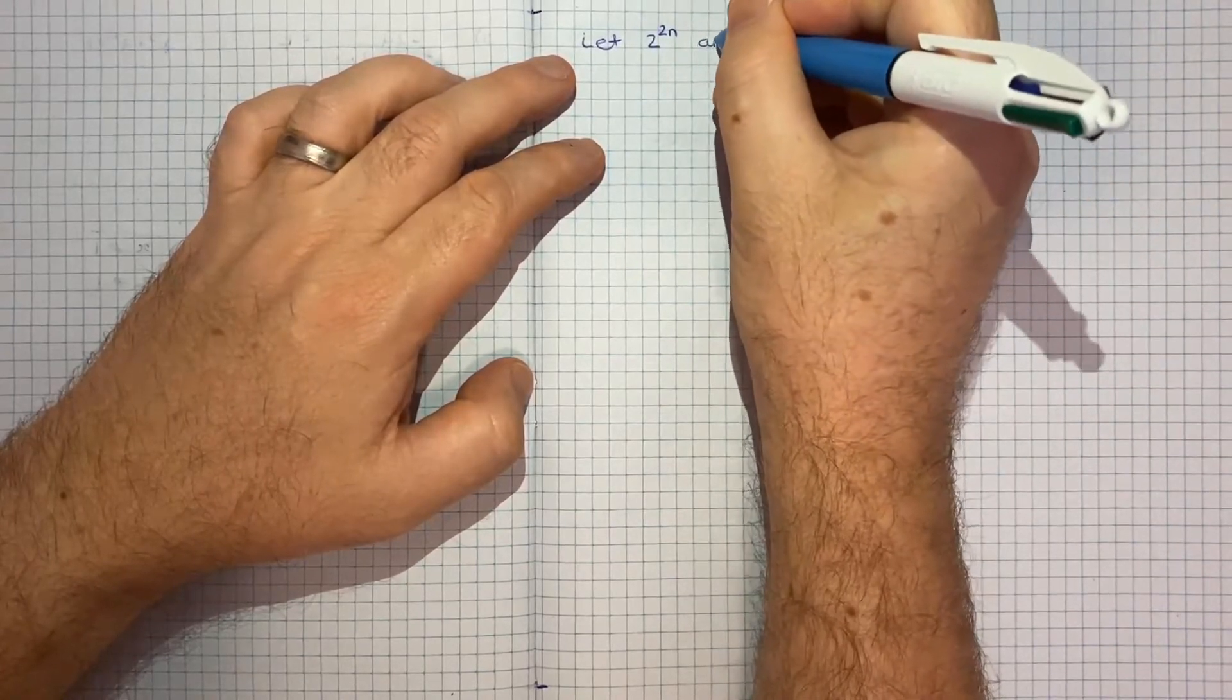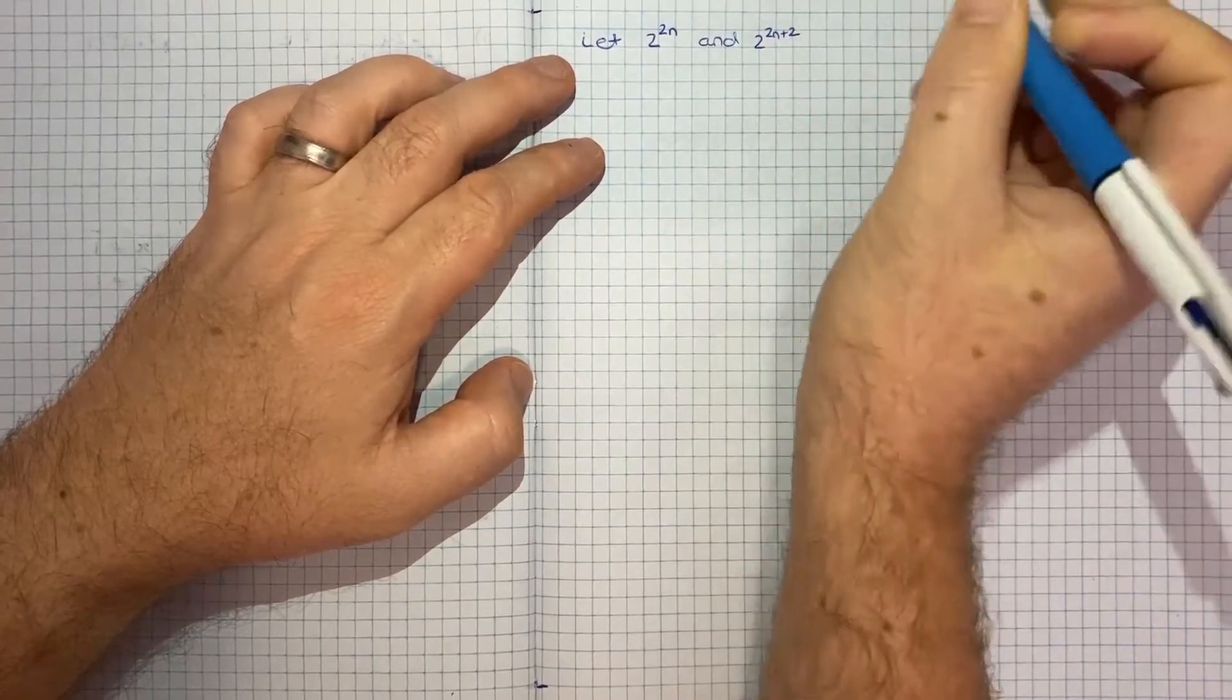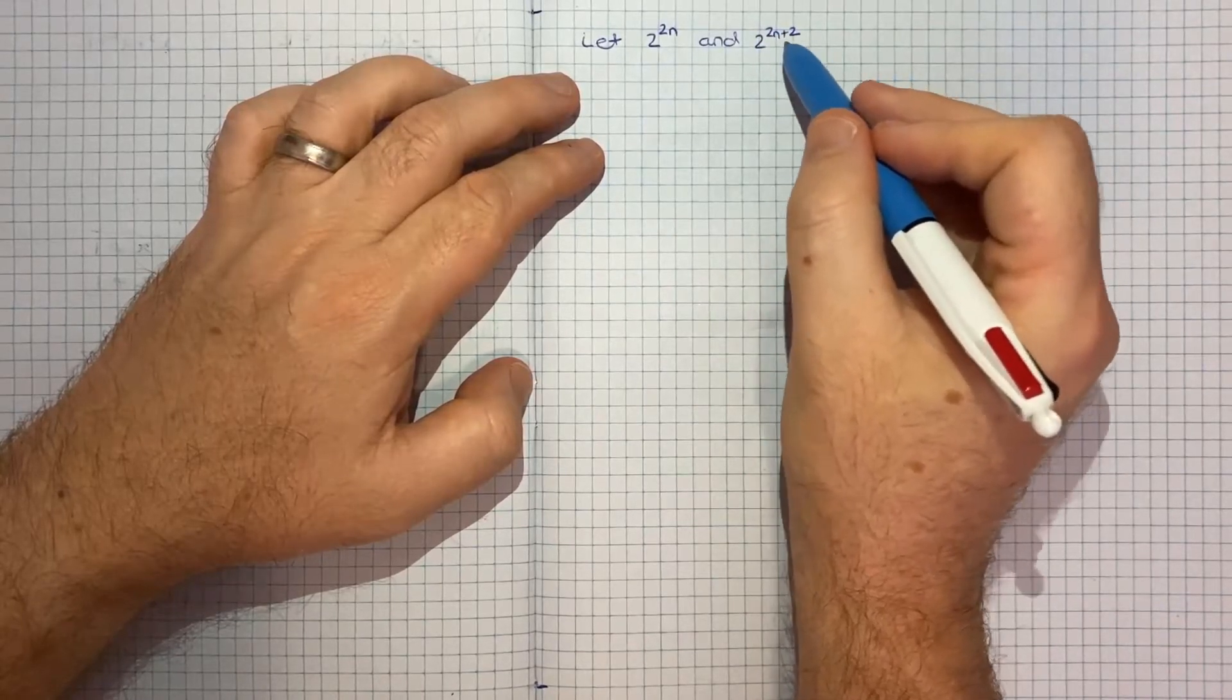And then we'll let 2 to the power of 2n plus 2 be the next 2 to the power of an even number.